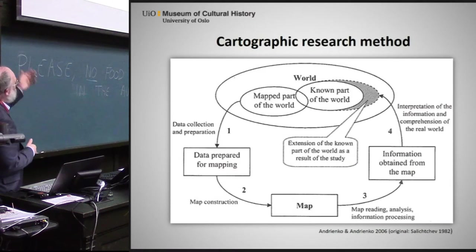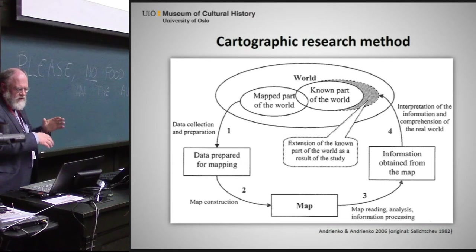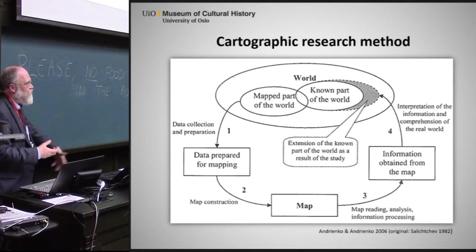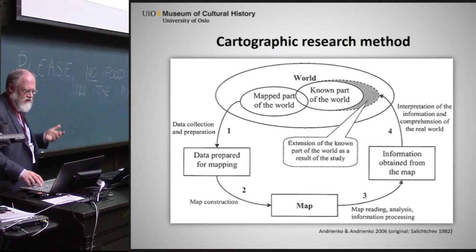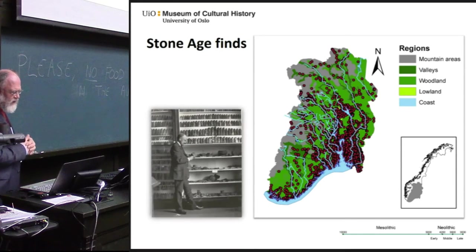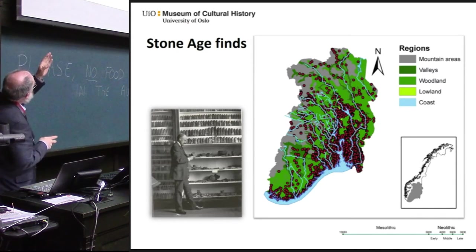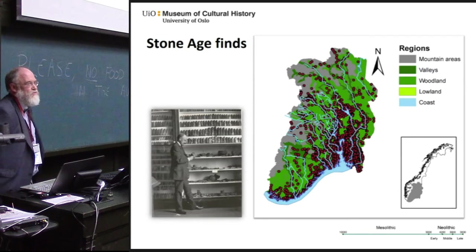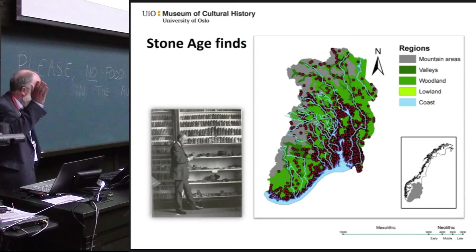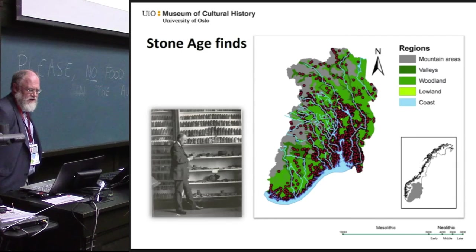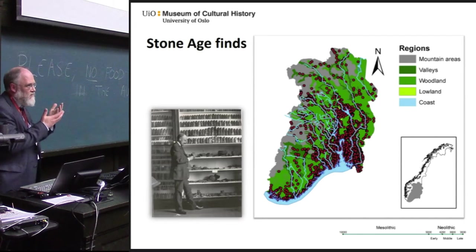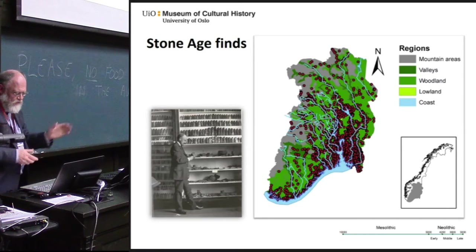It's also called the cartographic research method, where you start with a map of the whole area, prepare data for mapping, map them, get some more information, use that again for a new map, and go around this circle gradually getting more understanding of your material. This shows the Stone Age finds in our museum district, mapped on five different landscape areas. Down in the corner is Professor Gustafsson in the first Stone Age exhibition in the historical museum building from 1904. When we go out to the Viking Ship Museum later today, we will see his diaries from the excavation of the Oseberg ship, which he did in 1904 and 1905.